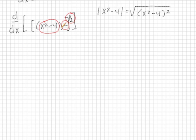So, taking the derivative of the outside function, we're going to get 1 half x squared minus 4 squared to the negative 1 half.